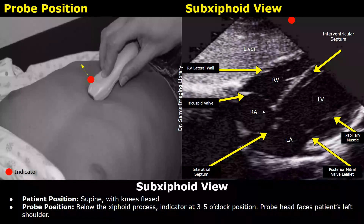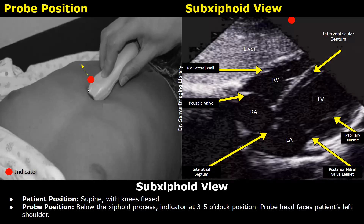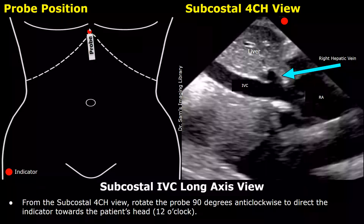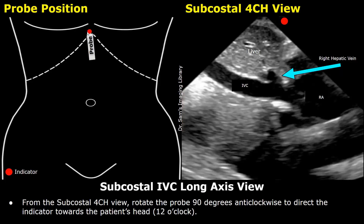The subxiphoid or subcostal view can be taken if there is trouble with the apical four-chamber view. The patient lies in the supine position with knees flexed. The probe is placed below the xiphoid process under the ribs with the indicator in the three to five o'clock position, giving a four-chamber view from a subcostal approach. From this view, rotate the probe 90 degrees anti-clockwise to direct the indicator towards the patient's head at approximately the 12 o'clock position to get the subcostal inferior vena cava long axis view, showing the IVC in longitudinal view draining into the right atrium.